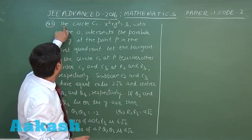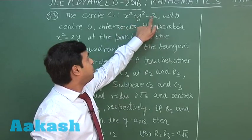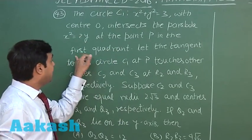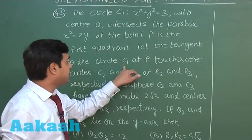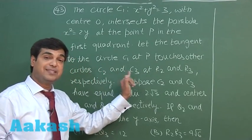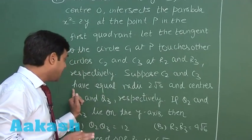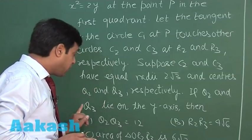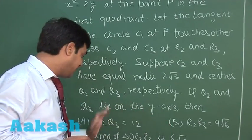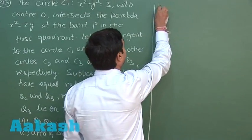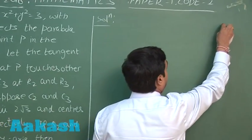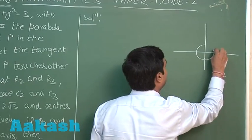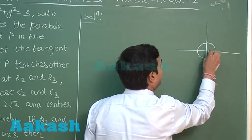Let us take the next question from paper 1. The circle C1: x² + y² = 3, centered at O, intersects the parabola x² = 2y at point P in the first quadrant. The tangent to circle C1 at P touches other circles C2 and C3 at points R2 and R3 respectively. C2 and C3 have equal radii 2√3 and centers Q2 and Q3 on the y-axis.